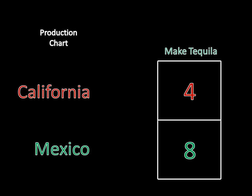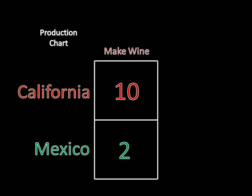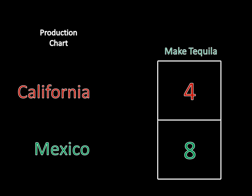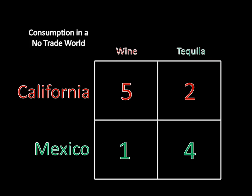Obviously, people aren't going to want to only drink wine — Californians like wine, but they also want some tequila. So if they were not trading, they would still have to split production time. California would have to produce some bottles of wine and some bottles of tequila to satisfy the market. The same would be true in Mexico — despite the fact that Mexico can only make two bottles of wine per day's labor versus eight bottles of tequila, people in Mexico still want some wine. So even without trade, Mexico would have to split production and produce some of both. For example, California might produce five bottles of wine and two bottles of tequila, while Mexico would produce one bottle of wine and four bottles of tequila per day of labor. That's what consumption looks like in a world without trade.